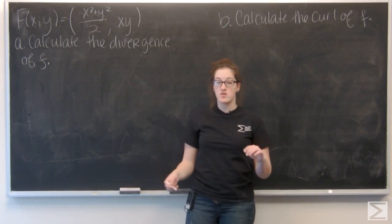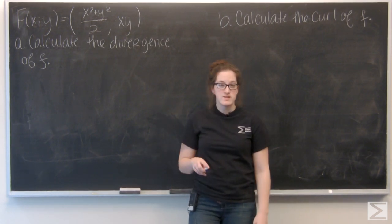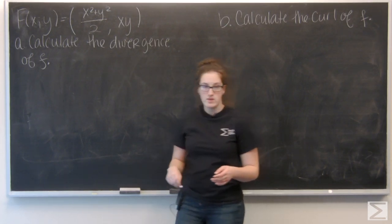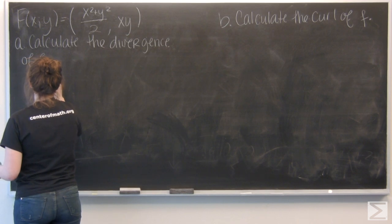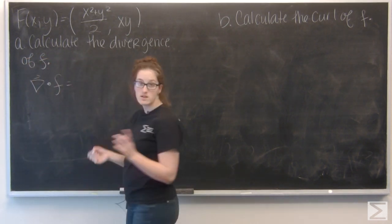So let's review what divergence and curl actually mean. Well, divergence is the dot product of the gradient vector and f. So it looks something like this.